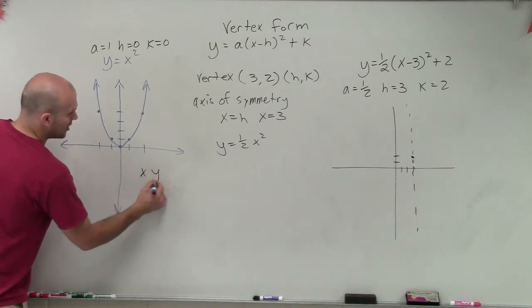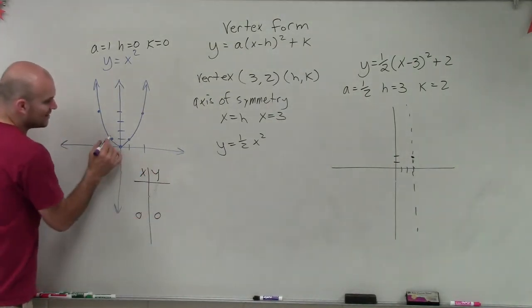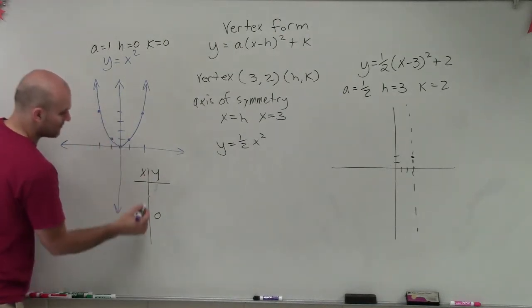Because at y equals x squared, if I was going to do a table of values for this, we know that at 0, I get 0. At negative 1, I get 1. And at negative 2, I get 4.